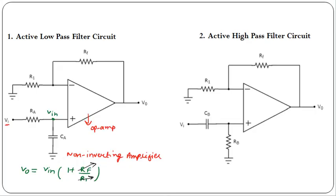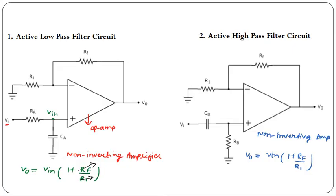For the active high pass filter, the circuit is almost similar. The input is applied at the non-inverting terminal. Here we have one capacitor in series and then a resistor in shunt. This is again a non-inverting amplifier configuration, so the output voltage equals V_input × (1 + RF/R1), where (1 + RF/R1) is the gain and V_input is the voltage at the non-inverting terminal.